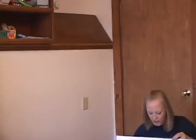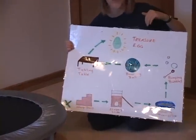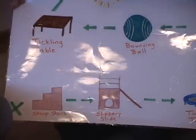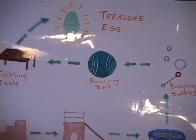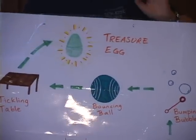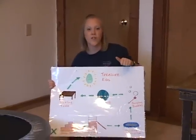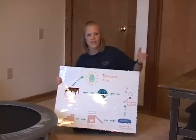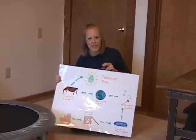We have our treasure egg as the prize, which we'll keep on the shelf. The obstacle course starts at X marks the spot, then goes to the steep stairs, the slippery slide, the tumbling trampoline, the bumping bubbles, the bouncing ball, the tickling table, and finally the treasure egg — which will have something really motivating inside for your child. We're going to work on attention span, interactive attention span, helping your child attend to you, and physical participation as your child goes through this obstacle course with you.